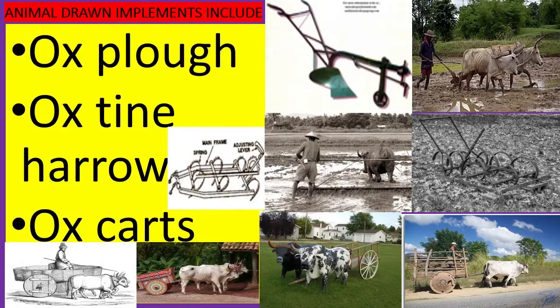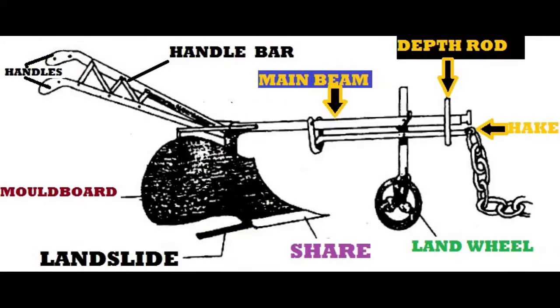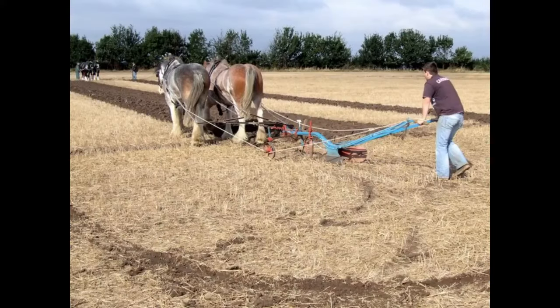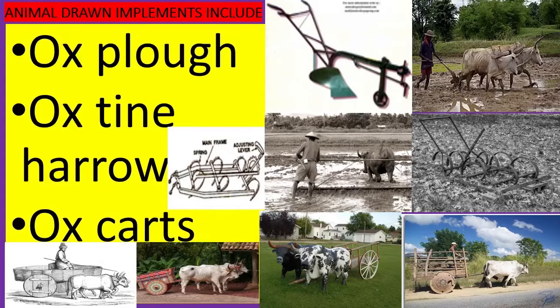Animal drawn implements include Ox Plough, Ox Tine Harrow, and Ox Carts.